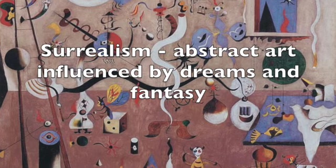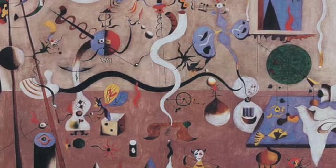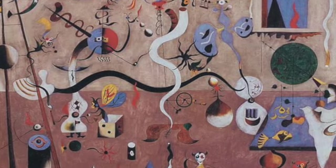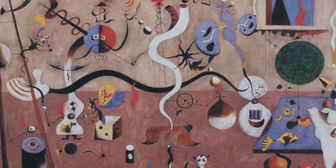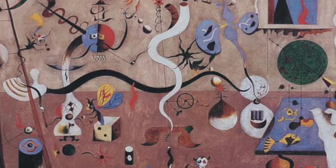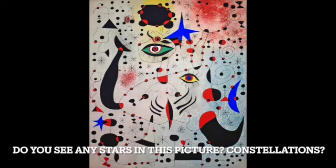Miro was a surrealist. Surrealists made art based on fantasy and dreamlike worlds. Miro was interested in vast expanses like the sky and the ocean and all things from the natural world.